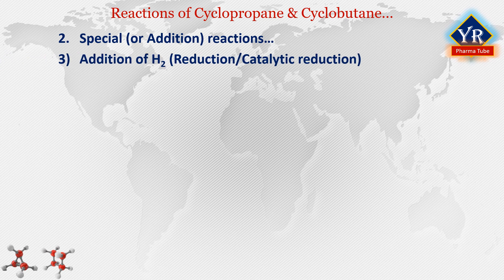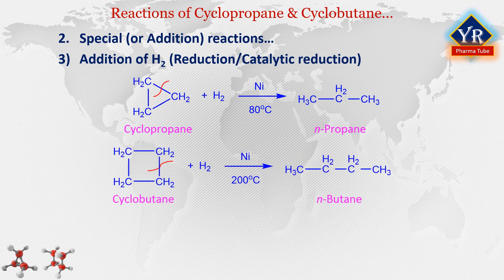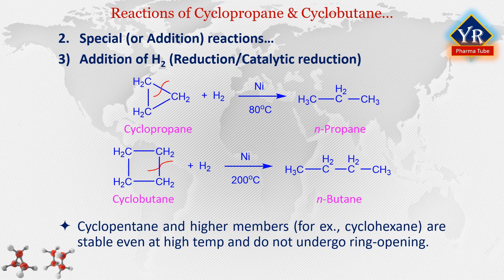Addition of hydrogen — reduction or catalytic reduction reaction: Cyclopropane and cyclobutane react with hydrogen in the presence of a nickel catalyst to produce n-propane and n-butane respectively. Hydrogenation of cyclobutane takes place at a higher temperature, that is at 200 degrees centigrade, than that required for cyclopropane, which is at 80 degrees centigrade.